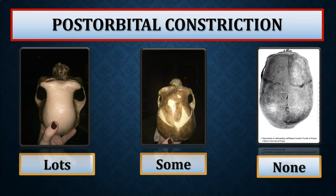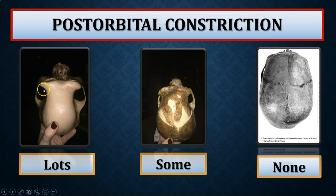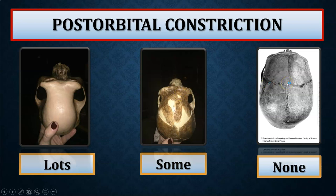Post-orbital constriction: the orbits are the eyes, the brow ridge is the supra-orbital ridge, and post-orbital constriction refers to how far it sinks in behind the brow. An australopithecine viewed from the top shows a high degree of post-orbital constriction, indicating relatively small-brained hominins. A Homo erectus fossil shows some constriction, but not nearly as dramatic. By the time you get to Homo sapiens, there's no constriction — feel from your brow to your hairline and your forehead is very vertical with no constriction behind the brow.